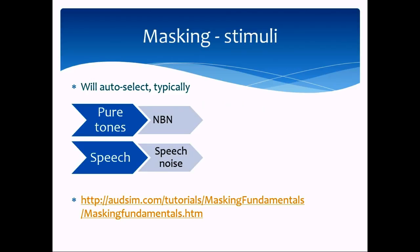For speech, you mask when the intensity level of speech is greater than or equal to bone conduction threshold plus inter-aural attenuation. And again, you may not always know bone conduction threshold when doing speech, so sometimes air conduction thresholds are used instead.